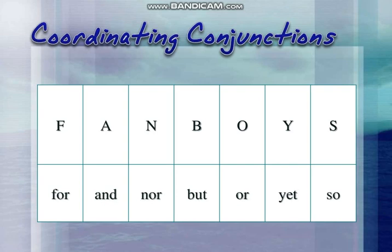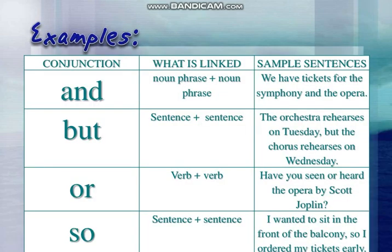Unlike other types of conjunctions, only these seven are coordinating conjunctions. There is a simple way to remember them — the formula FANBOYS: F for 'for,' A for 'and,' N for 'nor,' B for 'but,' O for 'or,' Y for 'yet,' and S for 'so.' So these are the coordinating conjunctions.